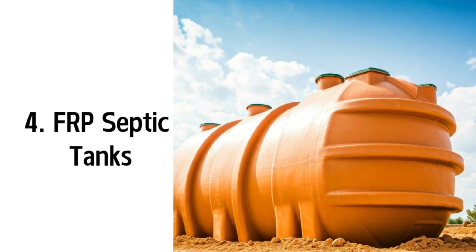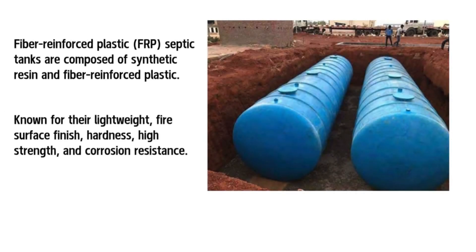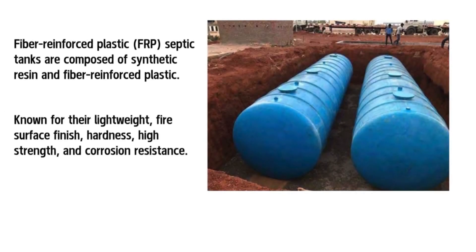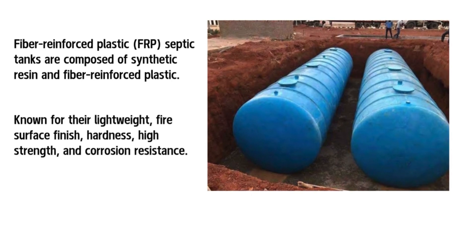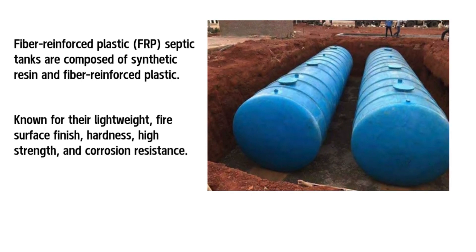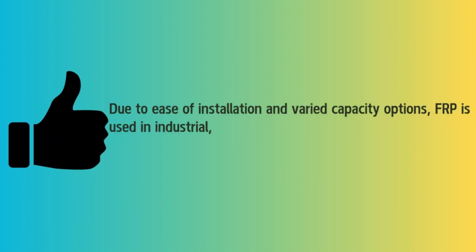4. FRP Septic Tanks. Fiber-reinforced plastic (FRP) septic tanks are composed of synthetic resin and fiber-reinforced plastic. They are known for their lightweight construction, fine surface finish, hardness, high strength, and corrosion resistance. Due to ease of installation and varied capacity options, FRP tanks are used in industrial, residential, and commercial areas.